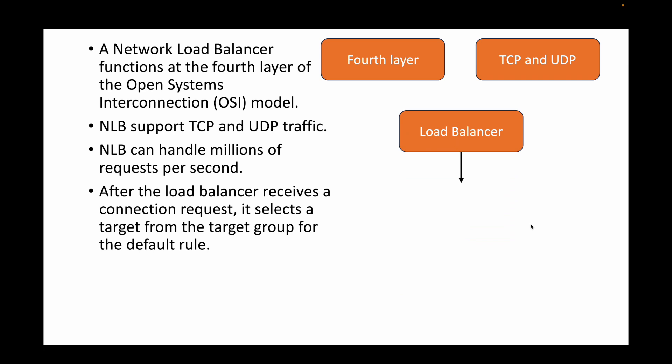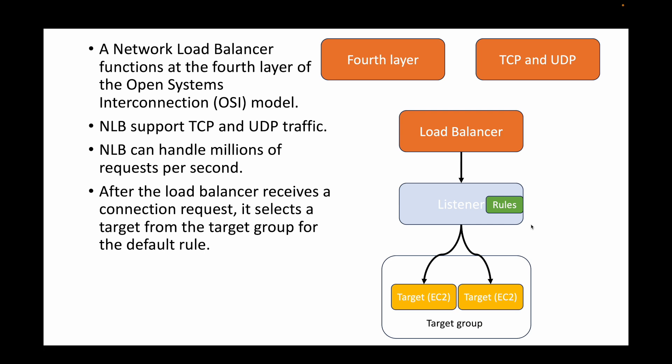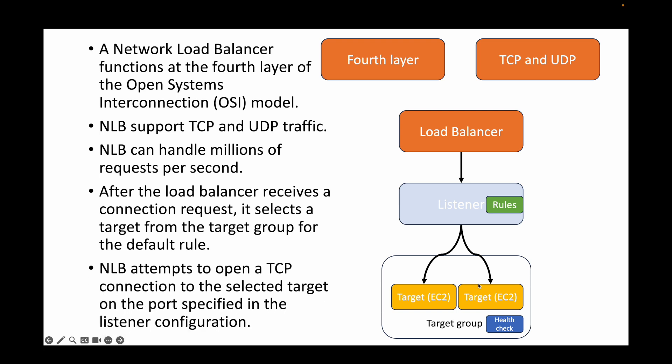After your load balancer receives a connection request on either TCP or UDP, it evaluates your listener rules and then selects a target from your target group for the default rule. The NLB works in a similar way to the ALB — the load balancer acts as a single point of contact, evaluates listener rules for TCP or UDP traffic, and forwards traffic to your target groups, which then route it to your EC2 instances.